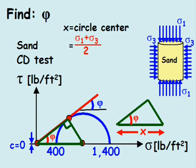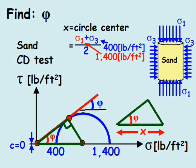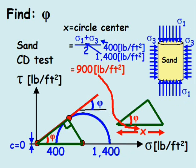x is an average of the confining and axial stresses. Plugging in 400 pounds per square feet for the confining stress and 1400 pounds per square feet for the axial stress, our value of x is 900 pounds per square feet.